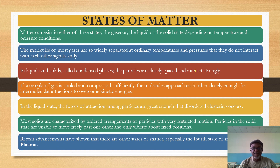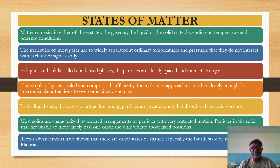Think of matter — matter can exist in three states: the gaseous, the liquid, and the solid state. Depending on temperature and pressure conditions, all matter can exist between these three states. For example, let's use water, which everybody knows about.